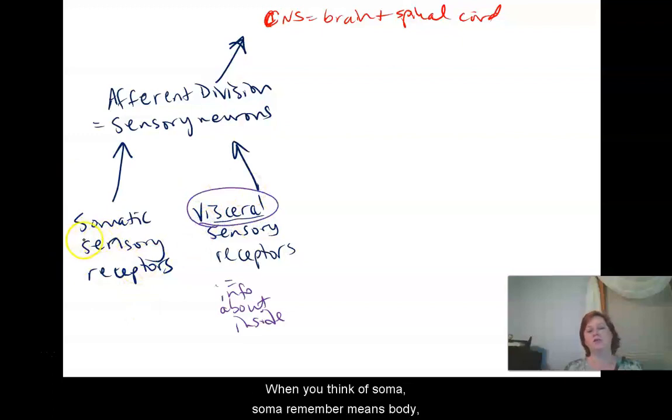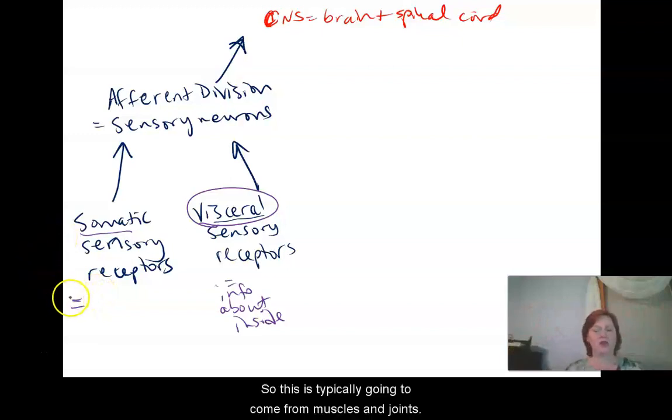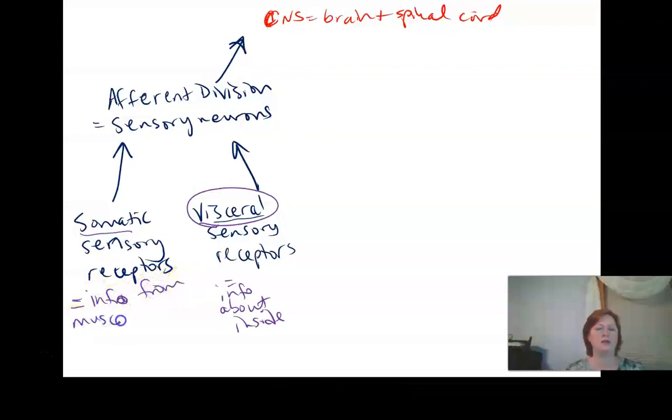When you think of soma, soma remember means body. So somatic sensory receptors give me information about my body and its relationship to the outside. This is typically going to come from muscles and joints. So this is info from muscles and joints about the outside.